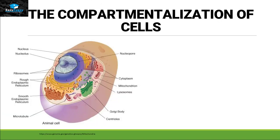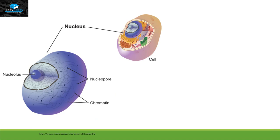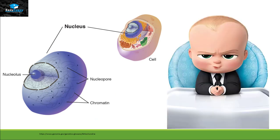In a eukaryotic cell we have a lot of different organelles, and each organelle performs a specific type of function, just like a factory. In a factory we have a lot of different departments working on specific tasks. For example, the nucleus of the cell is acting like a boss that is giving commands or tasks to other organelles to perform their function.